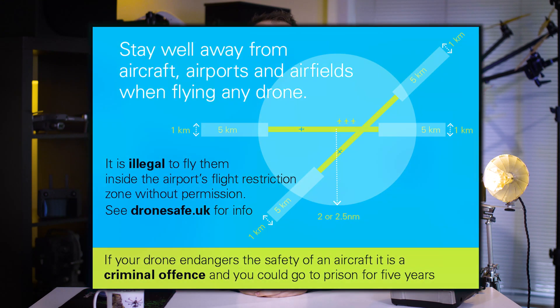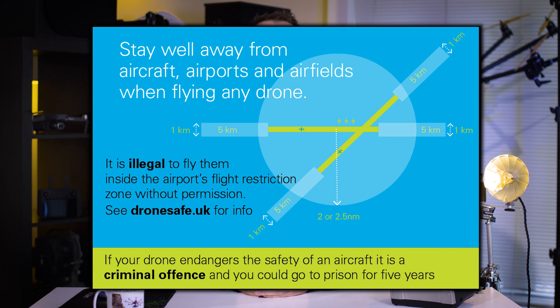Finally, number six: stay well away from aircraft, airports, and airfields. It's illegal to fly your drone within an airport's flight restriction zone without permission. As of March 2019, these FRZs cover a radius of 2 or 2.5 nautical miles and then cover 5 kilometres by 1 kilometre starting from the threshold at the end of each runway. These zones also extend up to a height of 2,000 feet. It's illegal to fly within these FRZs unless you have permission from air traffic control, or from the airport itself if ATC is not operational.